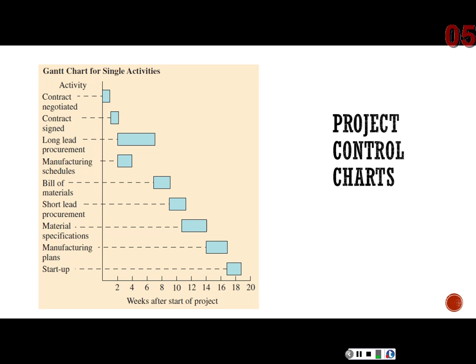It's named after Henry Gantt, who won a presidential citation for his application of this type of chart to shipbuilding during World War I. So this type of view has been around for a long time. We can see a couple of those tasks could start at the same time — long-lead procurement and manufacturing schedules — and then all the others have to be done in sequence, one following the other.